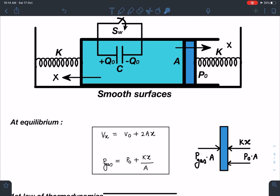And this pressure of the gas by balancing force on the piston we can get, and that is going to be P_gas is equal to P0 plus Kx by A. This is very very simple.